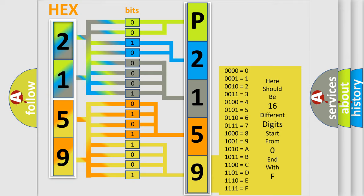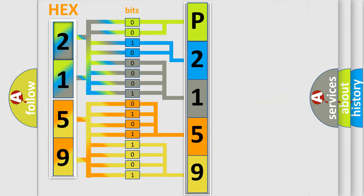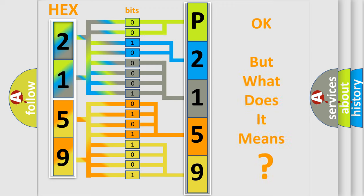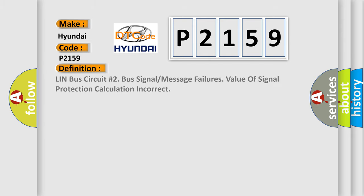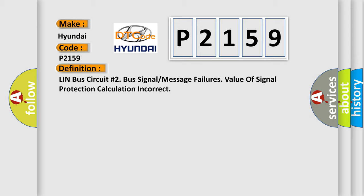We now know in what way the diagnostic tool translates the received information into a more comprehensible format. The number itself does not make sense unless we can assign information about what it actually expresses. So, what does the Diagnostic Trouble Code P2159 interpret specifically for Hyundai? The basic definition is: LIN bus circuit number 2, bus signal or message failures — value of signal protection calculation incorrect.